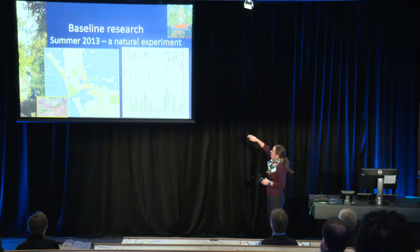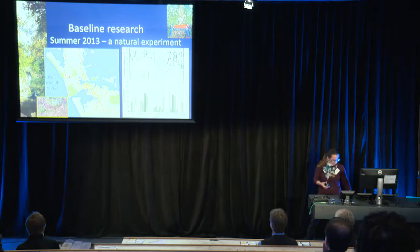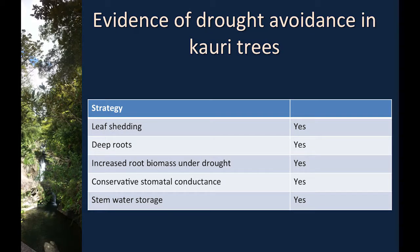In my Marsden work, I've been doing baseline research to understand how the trees respond to natural conditions. I'm working at the Huapai Scientific Reserve, which is one of the University's pieces of land available for research — a patch of remnant Kauri forest. We were lucky enough to catch the summer 2013 drought within that period, which was a really nice natural experiment. This figure at the top right shows the soil moisture, highlighting that dry period where soil moisture declined significantly when there was very little rainfall, so we could look at how the trees were responding to those conditions.